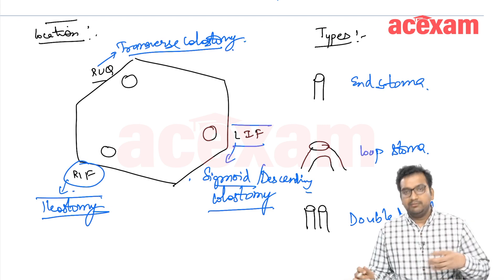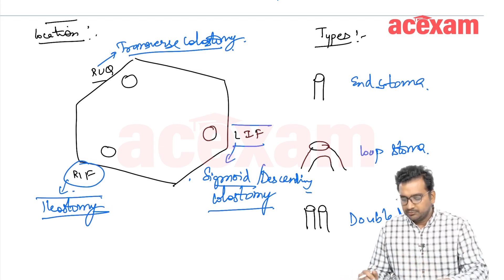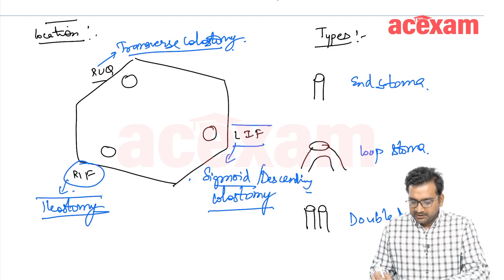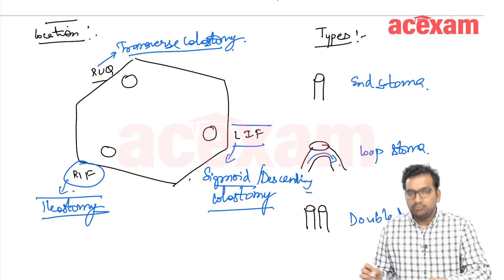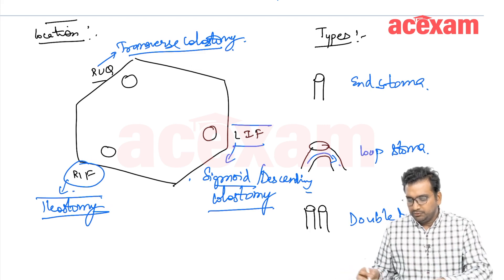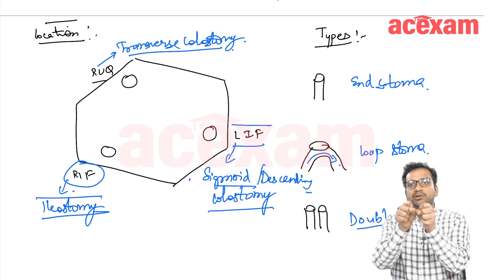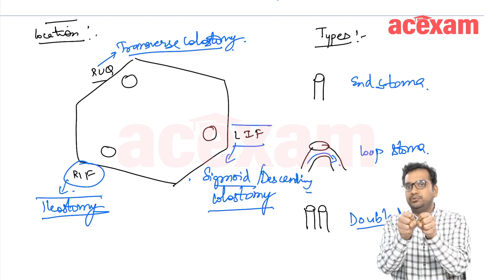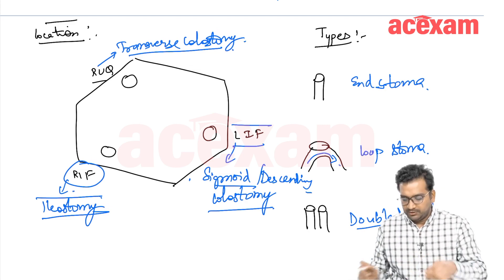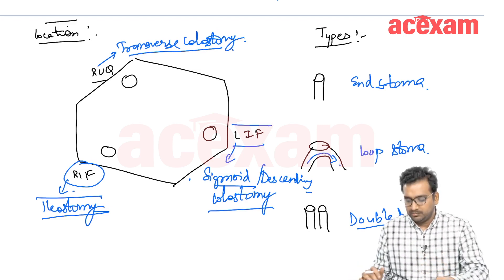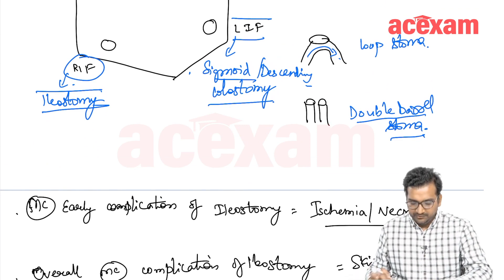In loop stoma, it is done to give rest to the distal pathology or distal anastomosis, but there is still some possibility that content can go to the distal end — about 90–99% of content goes through the stoma. If we want to eliminate that possibility entirely, we do a double barrel stoma, where both ends are divided and brought out separately, like the barrels of a double-barrel gun.